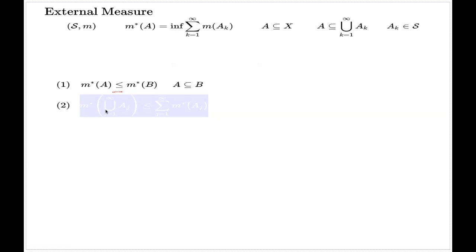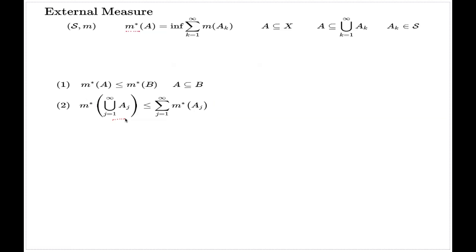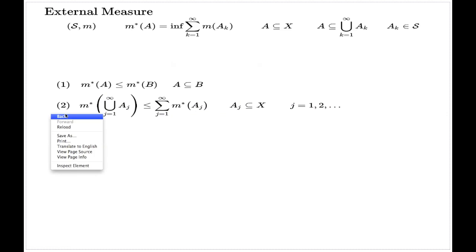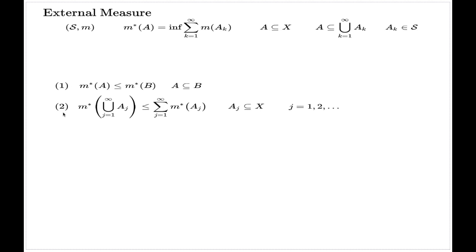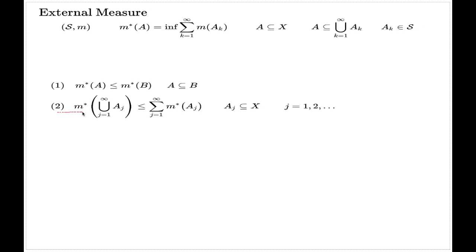That establishes the first property. The second property is more involved: it tells us that the external measure is sigma-subadditive, so the external measure of a countable union of subsets is controlled by the sum of individual external measures. We put no restrictions on the collection of subsets A_j.